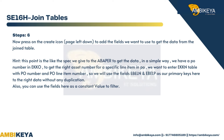Hint: This point is like the spec we give to the ABAP developer to get the data. We have a PO number in EKKO. To get the correct asset number for a specific line item in a PO, we want to enter the EKKN table with the PO number and PO line item number. So we will use the fields EBELN and EBELP as our primary keys to get the right data without any duplication. You can also use the fields here as a constant value to filter.